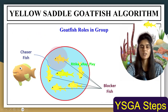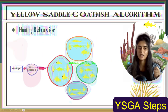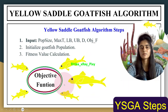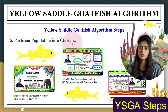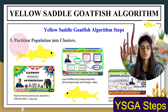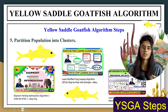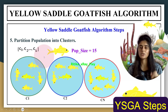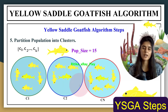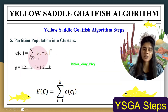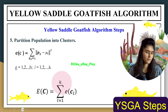Next, we partition the population into clusters, just as the goatfish divide into subgroups. This algorithm uses k-means clustering to form clusters from the goatfish population. K-means minimizes the squared error between the set of data points and the mean, using the objective function. This type of clustering has also been used in other metaheuristics such as Elephant Herding Optimization and Shuffled Frog Leaping Algorithm.